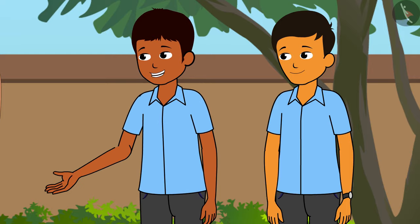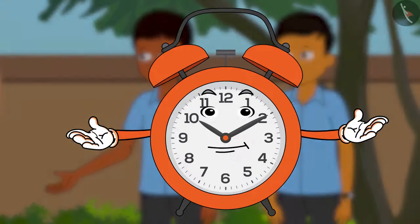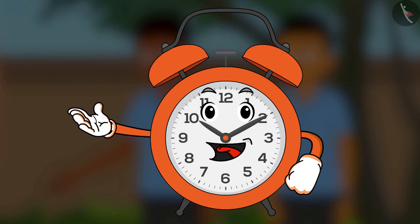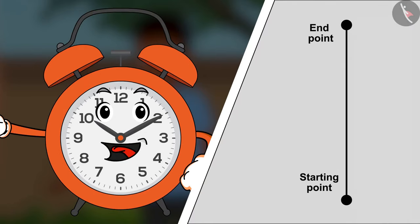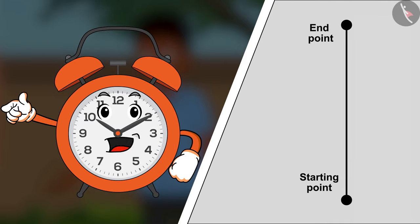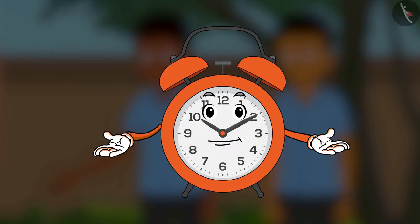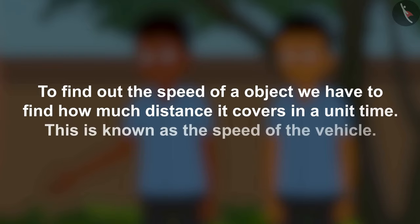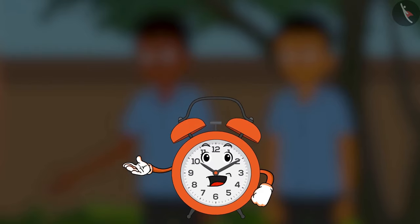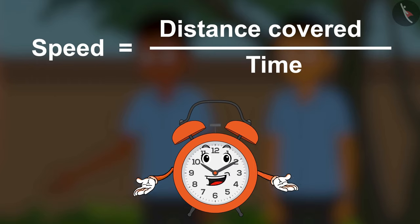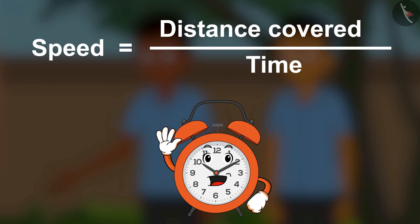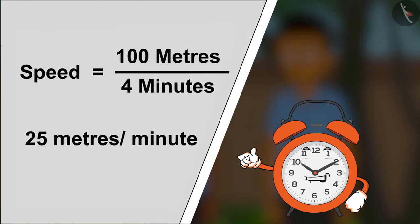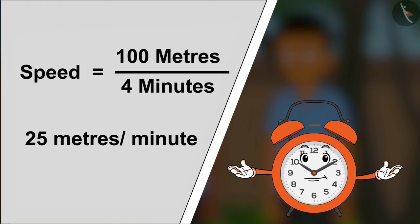I want to know who was faster, Ram or me? Children, whenever there is a race in your school, there is a starting point and an end point. The winner is the one who finishes this distance in the least time. To find out the speed of your object, we have to find how much distance it covers in a unit time — this is known as the speed of the vehicle. Therefore, speed is equal to distance divided by time. So, if Shyam and Ram covered a distance of 100 meters in 4 minutes, then what was their speed?